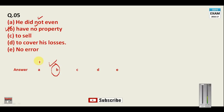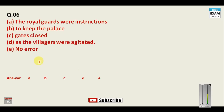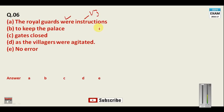Please watch this video till the end — all questions are very important. Question number six: 'The royal guards were instructions to keep the palace gates closed as the villagers were agitated.' The villagers were angry and agitated. The royal guards were instructed — somebody instructed them. In passive voice with the helping word 'were,' we must use the third form of the verb, which is 'instructed.' Your answer for question number six is A.